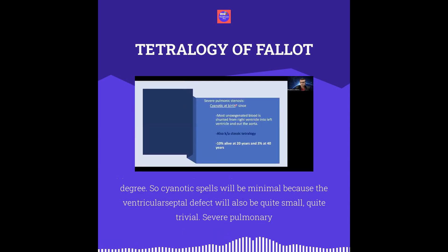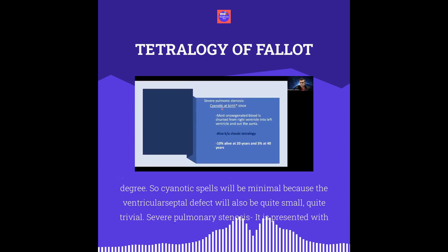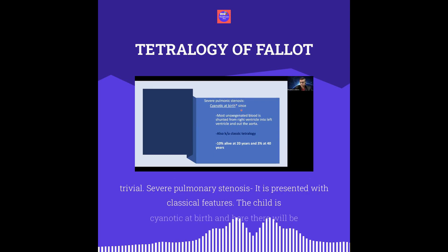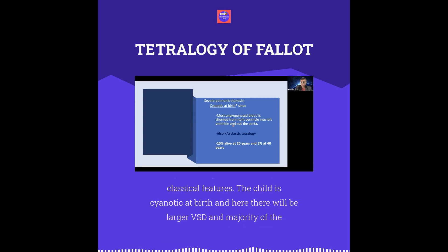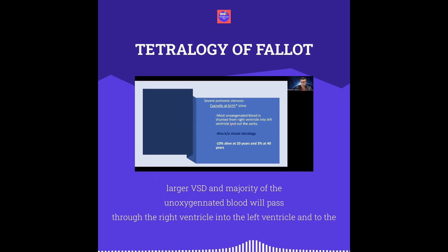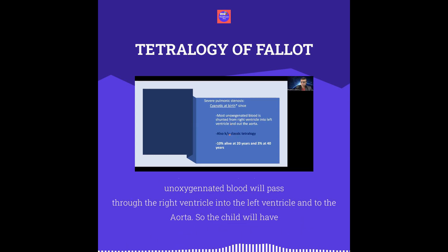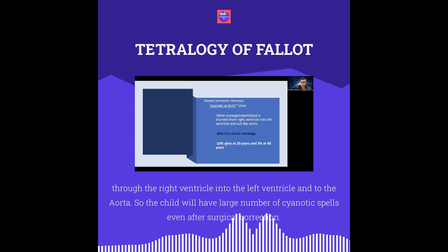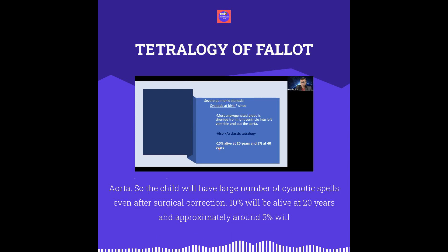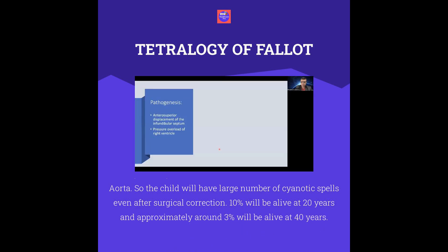In severe pulmonary stenosis, the child presents with the classical feature — cyanotic at birth. There will be a larger VSD, and the majority of unoxygenated blood will pass from the right ventricle into the left ventricle and to the aorta. The child will have a large number of cyanotic spells. Even after surgical correction, approximately 10% will be alive at 20 years and around 3% at 40 years.